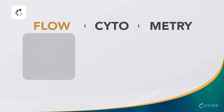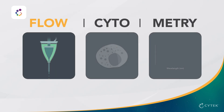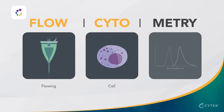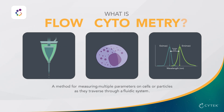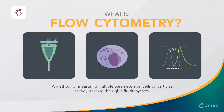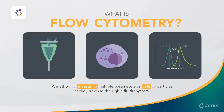The word flow refers to the sample flowing through the fluidic system. Cyto means cell, and metri means measurement. So, at its core, flow cytometry is a method for measuring multiple parameters on cells or particles as they traverse through a fluidic system.